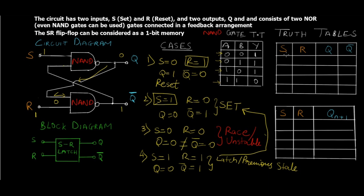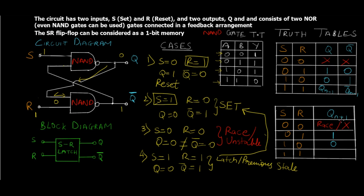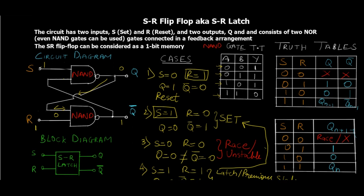Filling out the truth table for the NAND version with inputs 0 0, 0 1, 1 0, 1 1: for S=0, R=0 — race condition, marked X; for S=0, R=1 (reset) — Q=1 and Q-bar=0; for S=1, R=0 (set) — Q=0 and Q-bar=1; for S=1, R=1 — previous state Q(n-1) and Q-bar(n-1). In the next-state table: for 0 0 — race/X; for 0 1 (reset) — Q(n+1)=1; for 1 0 (set) — Q(n+1)=0; for 1 1 — Q(n+1)=Q(n).